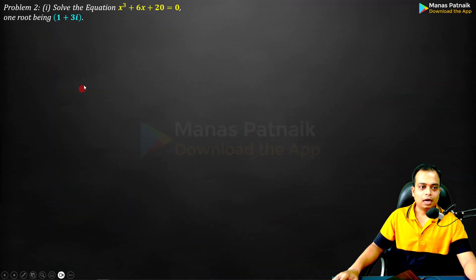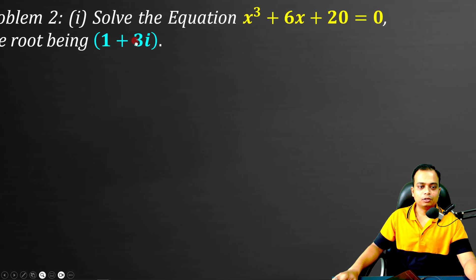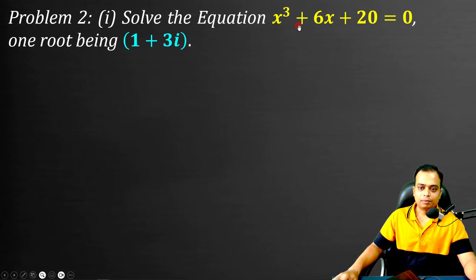Let me read problem two, part one. Solve the equation x³ + 0x² + 6x + 20 = 0, one root being 1 + 3i.